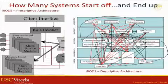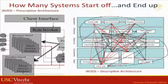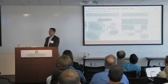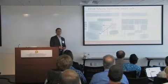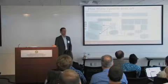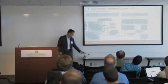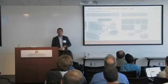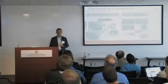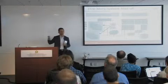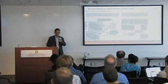Many systems start off this way. Here's an example system called iRODS — it's a data grid system. It's supposed to help you manage huge amounts of data across multiple machines, some of which you may own and others you borrow. This diagram actually comes from the iRODS documentation; you can find this very diagram in Wikipedia and other online documentation.